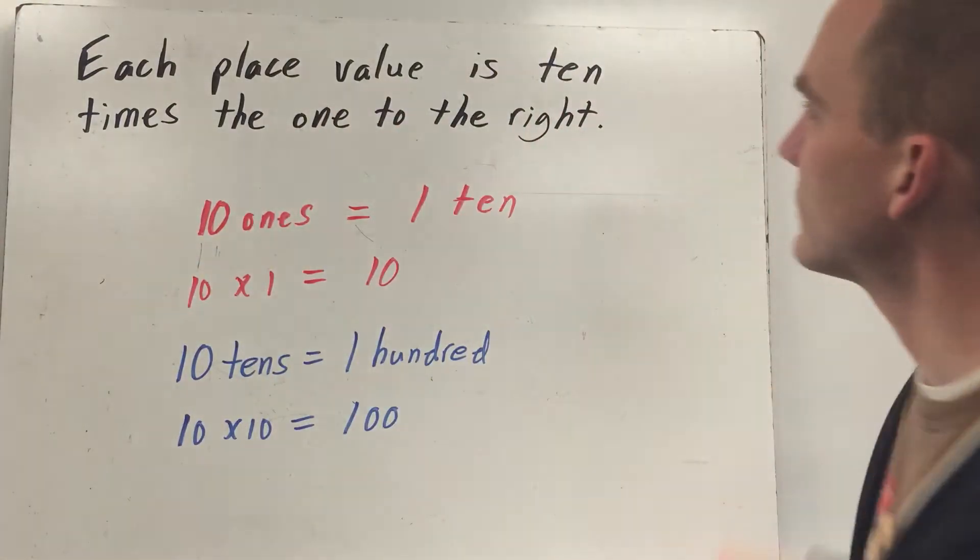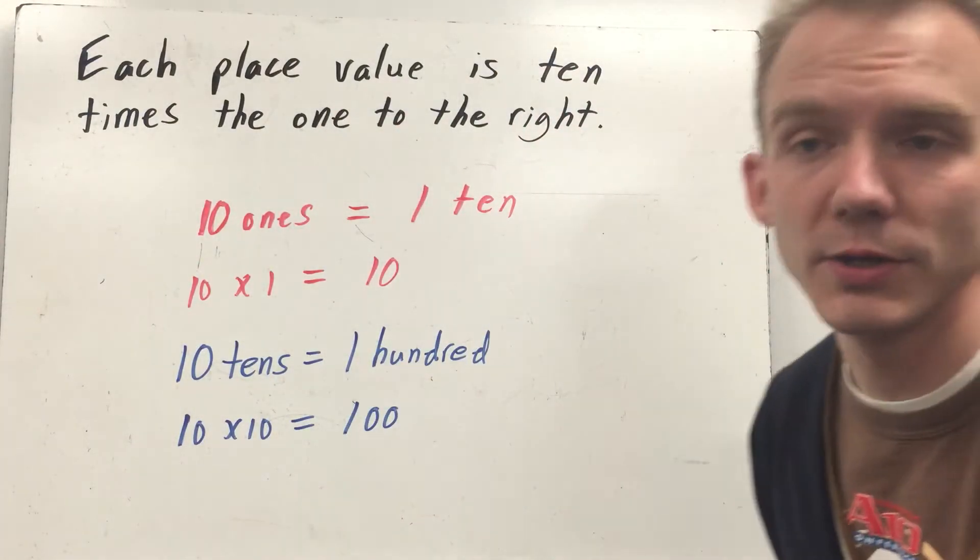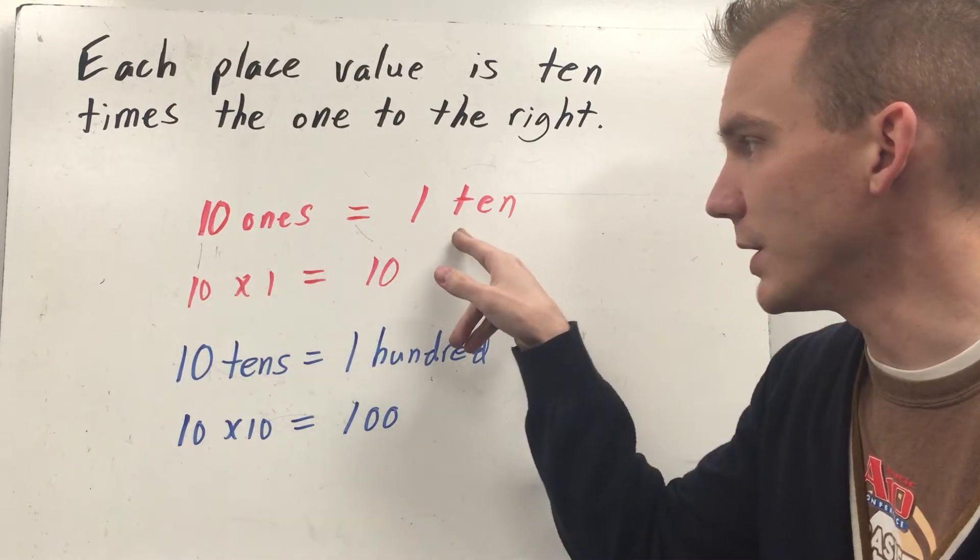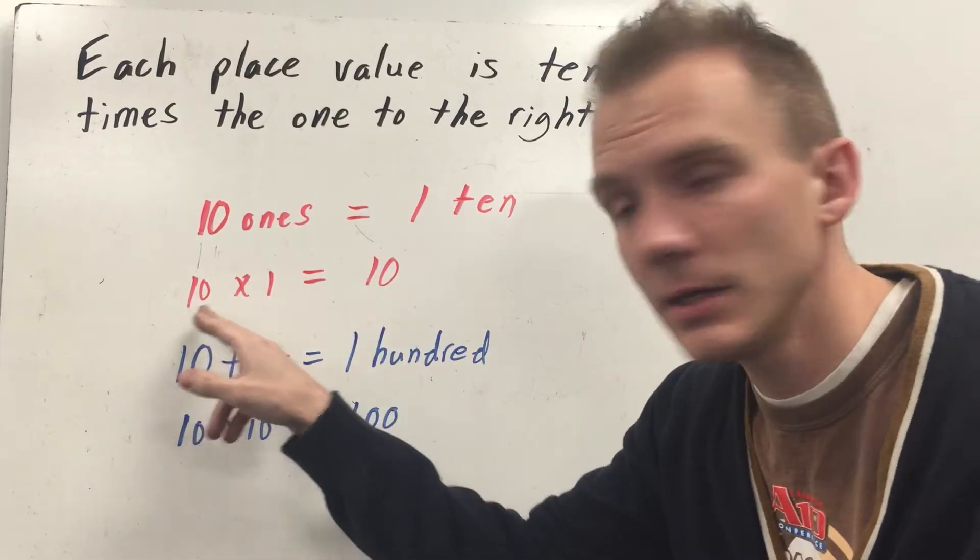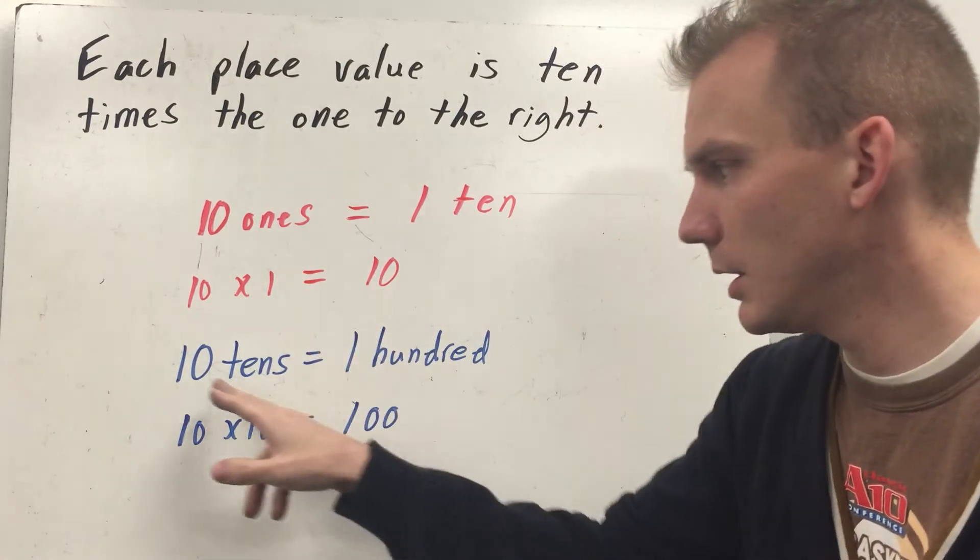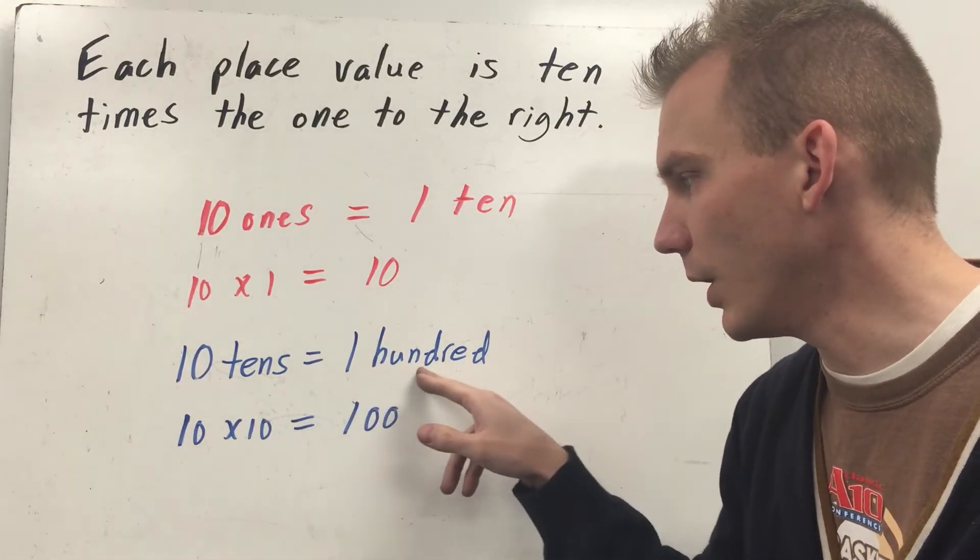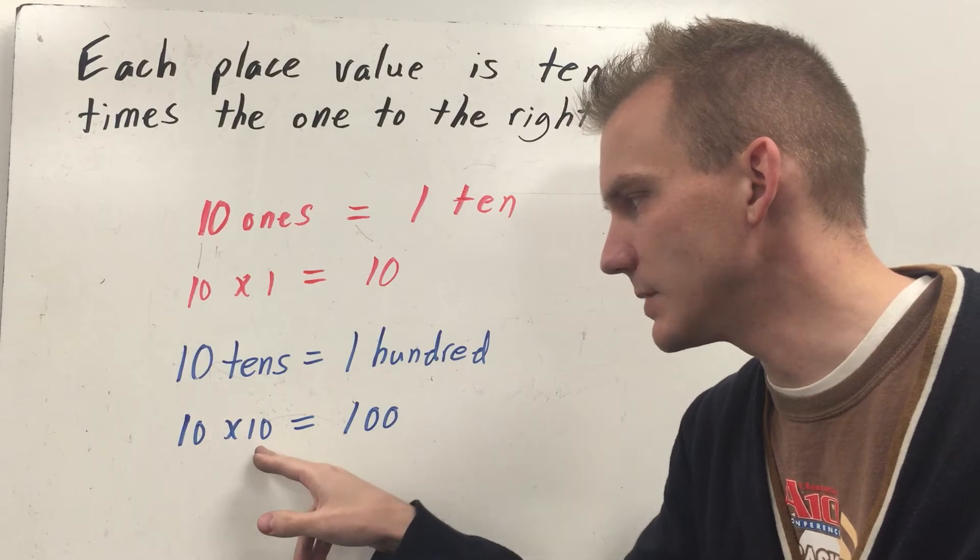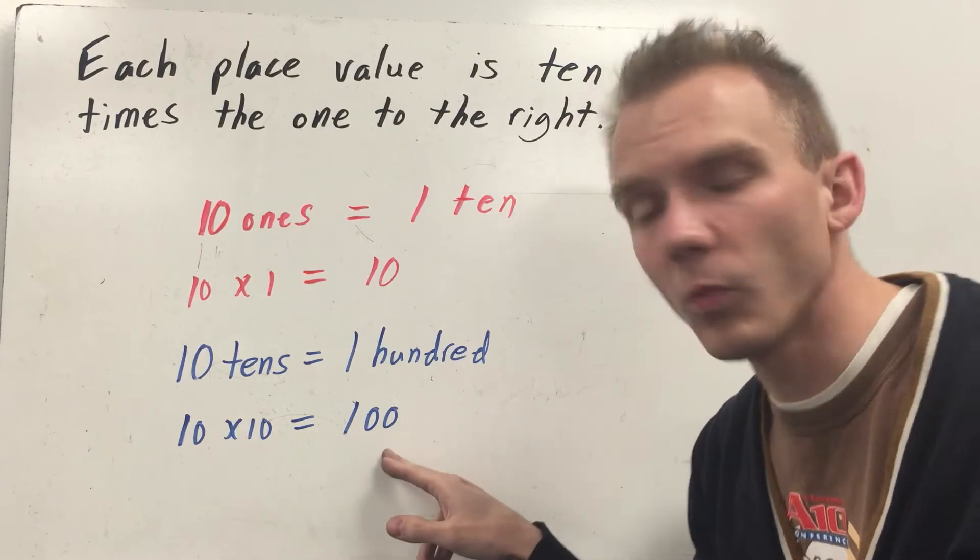So each place value is ten times the one to its right. When I have ten ones, that equals one ten. Or basically ten times one equals ten. Ten tens equals one hundred. Or ten times ten equals one hundred.